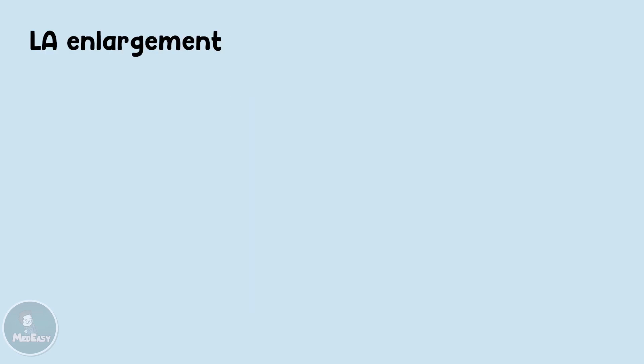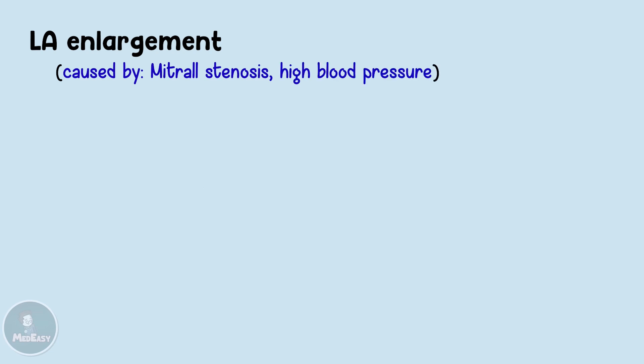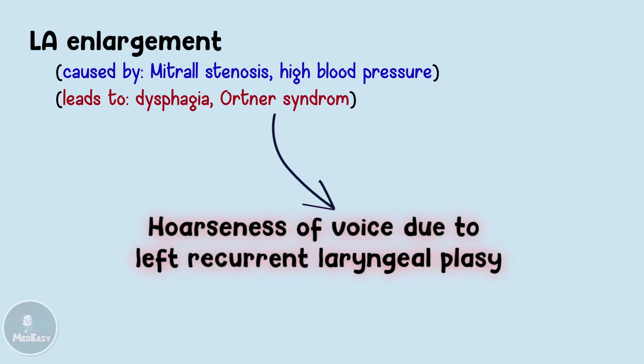This enlargement can occur in conditions like mitral stenosis and in patients with moderate to severe hypertension. Left atrial enlargement can also cause Ortner syndrome, which is hoarseness of the voice due to recurrent laryngeal nerve palsy, secondary to this compression.